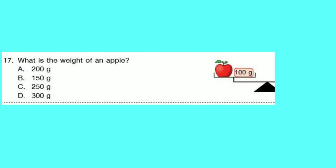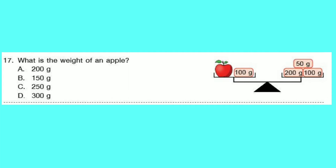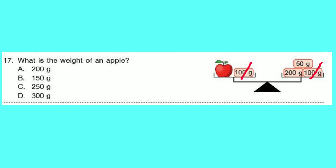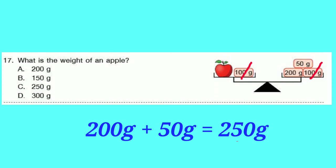Question number 17: What is the weight of an apple? Using the weighing scale, subtracting 100 grams from both sides, we get an apple equal to 200 grams plus 50 grams. So option C is correct — 250 grams.